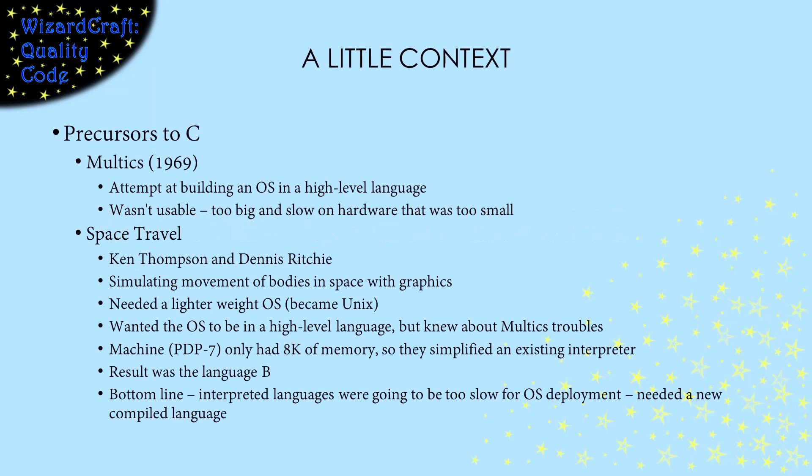The roots of C are important to understanding why C was designed the way it was. C grew out of some events in the 60s and early 70s. In 1969, the first attempt was made to build an operating system in a high-level language instead of an assembly language. But that didn't pan out — it was too slow to be useful.